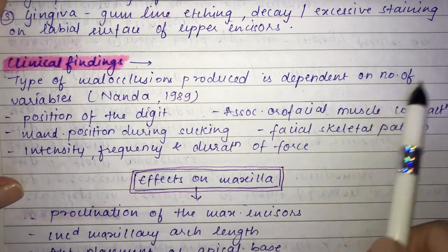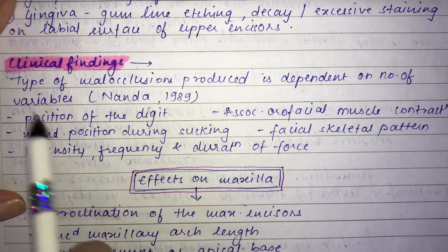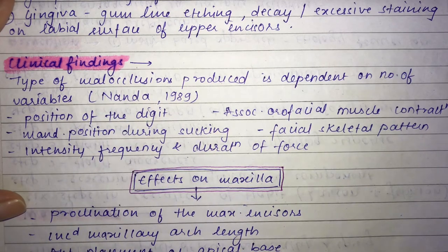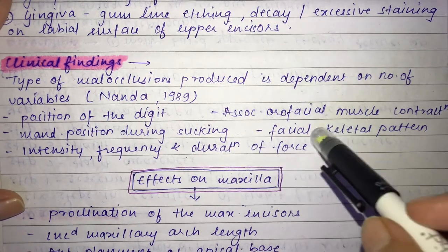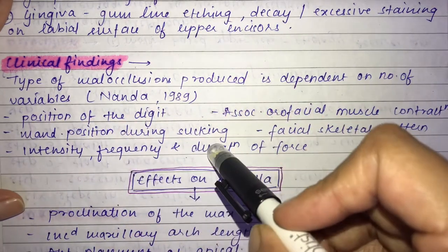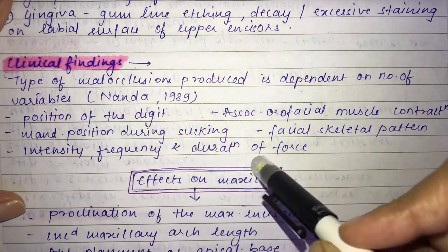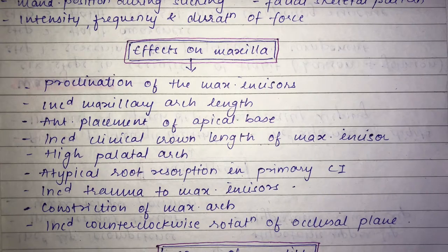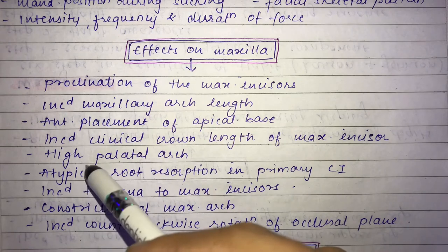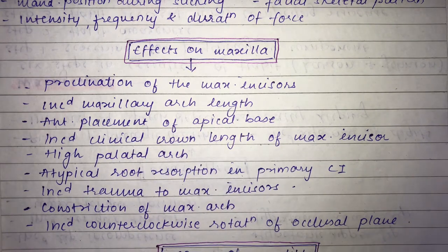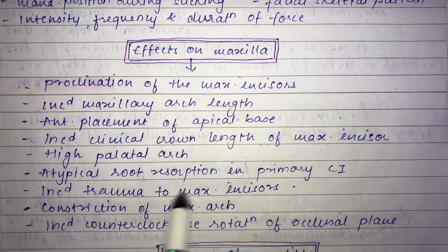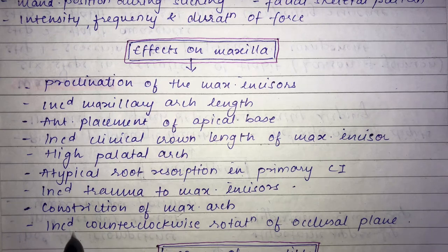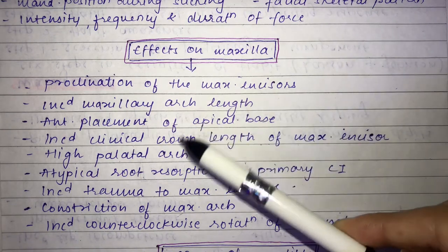The type of malocclusion produced depends on variables identified by Nanda: the position of the digit in the mouth, associated orofacial muscle contraction, mandibular position during sucking, facial structural pattern, and the intensity, frequency, and duration of the force. Effects on the maxilla include proclination of maxillary incisors, increased maxillary arch length, anterior placement of the apical base, increased clinical crown length, high palatal arch, atypical root resorption, and constriction of the maxillary arch.